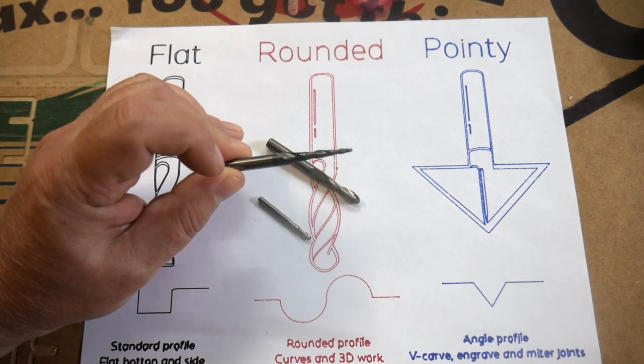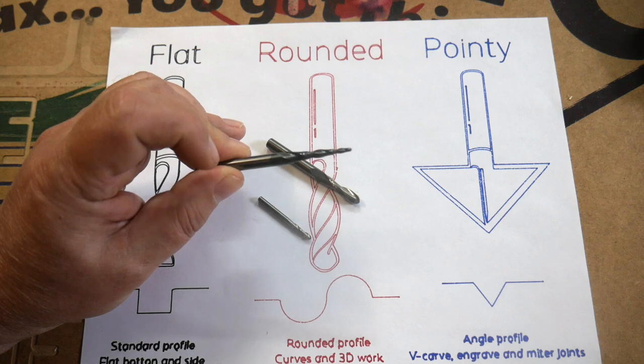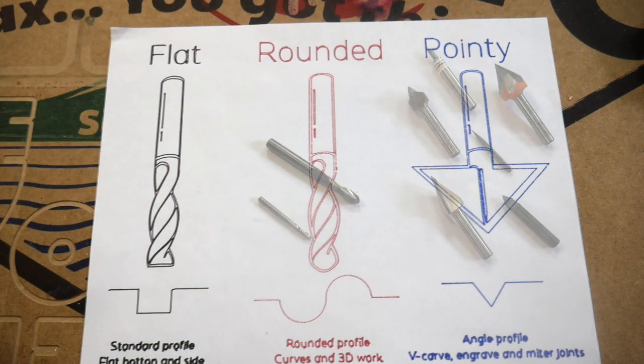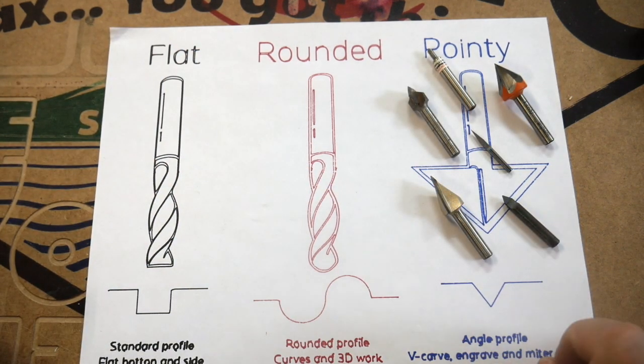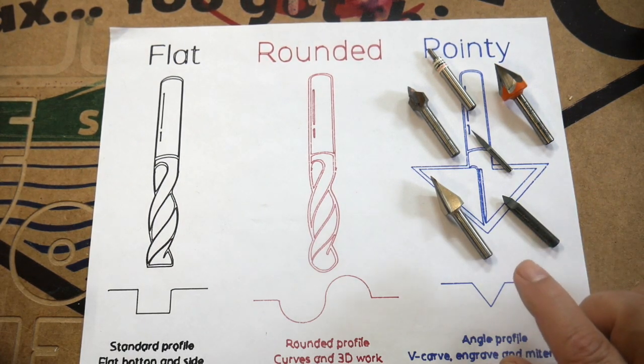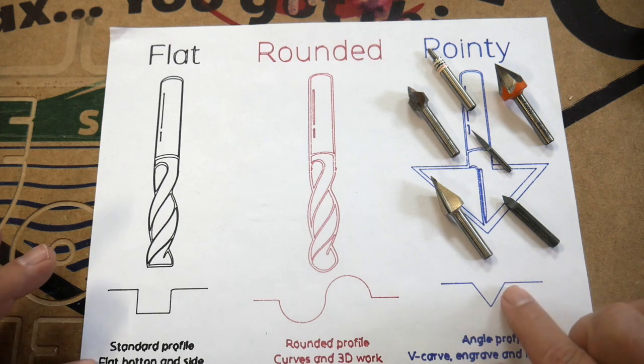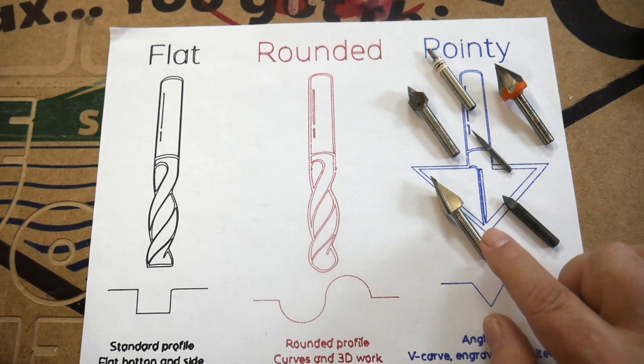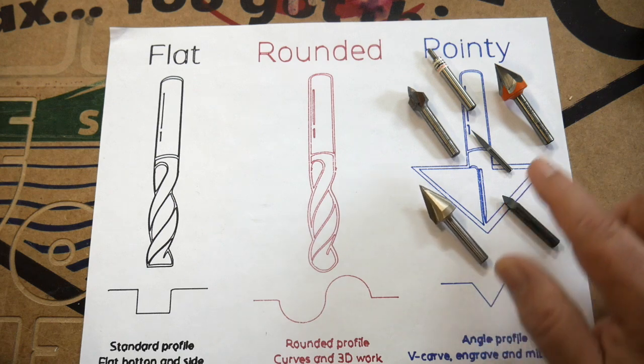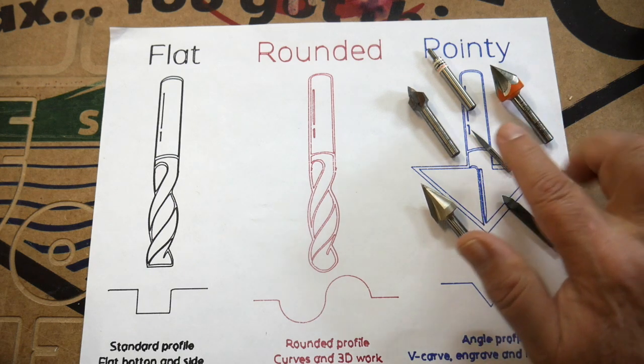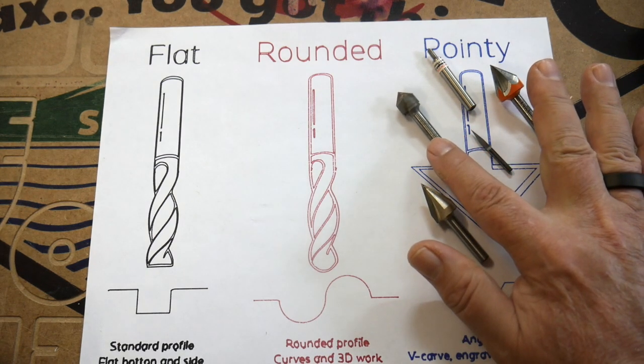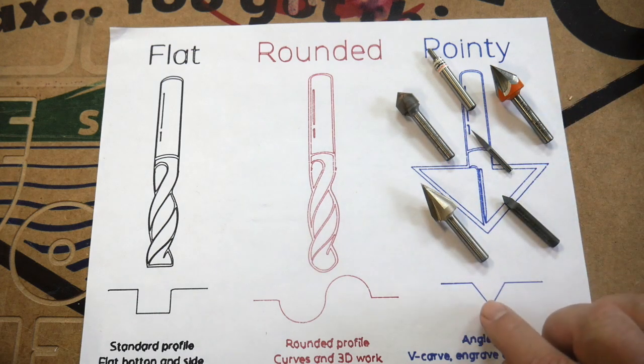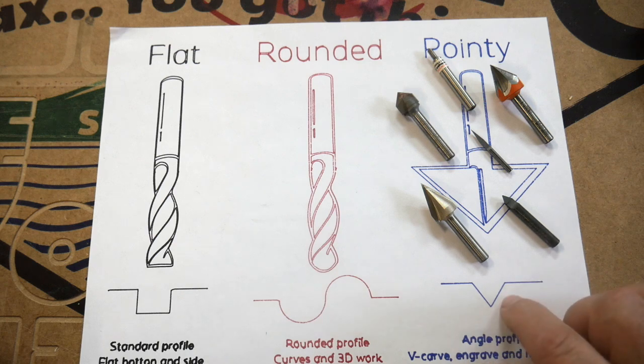Now our pointy bits, also called V-bits, come in all kinds of angles and sizes, and there's quite a lot of different kinds of these. This one is a 45, this one is a 60, and this one is a 90 degree bit. Again, these are going to cut this kind of channel. They're very good for V-carving, for creating the little miter joints like I do for my boxes, even for engraving.